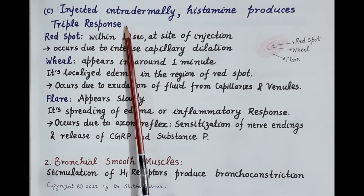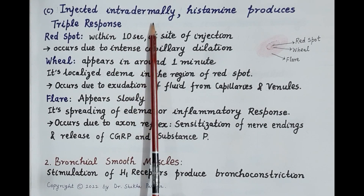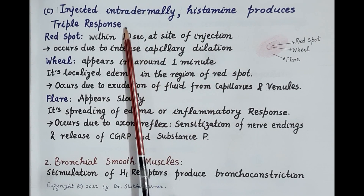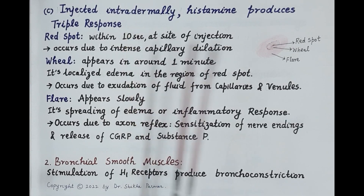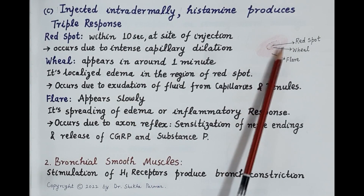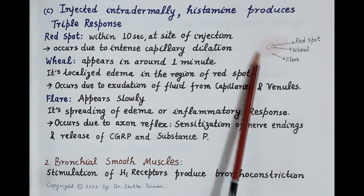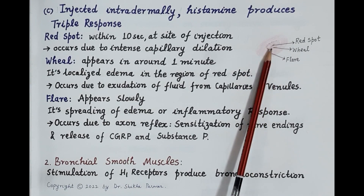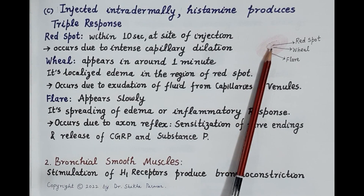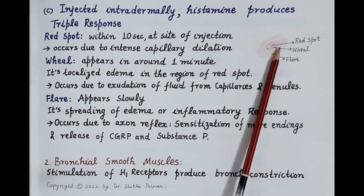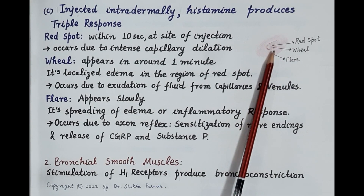Another important response: when histamine is injected intradermally, it produces a triple response — three responses are observed: a red spot surrounded by a wheal and flare. The red spot in the center at the site of injection is due to marked vasodilation. Surrounding the red spot is the wheal, which occurs due to accumulation of fluid causing edema or swelling.